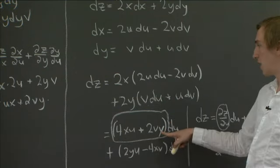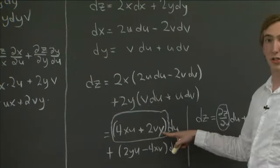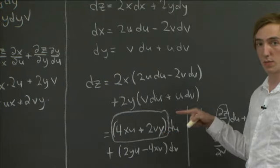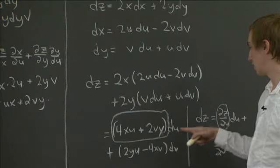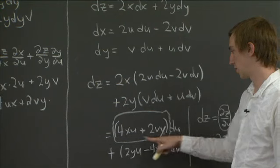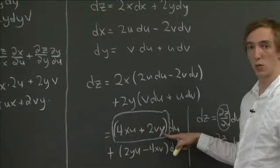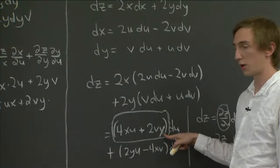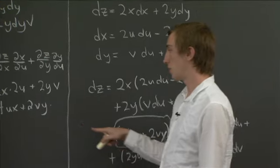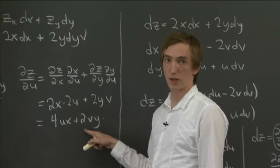Okay, now, you know, just as a sanity check, why don't we go back to the middle of the board, and we'll see that we got the same thing. So 4xu plus 2vy, that's what we concluded for ∂z/∂u. And then going back to the middle of the board, that's what we found again.